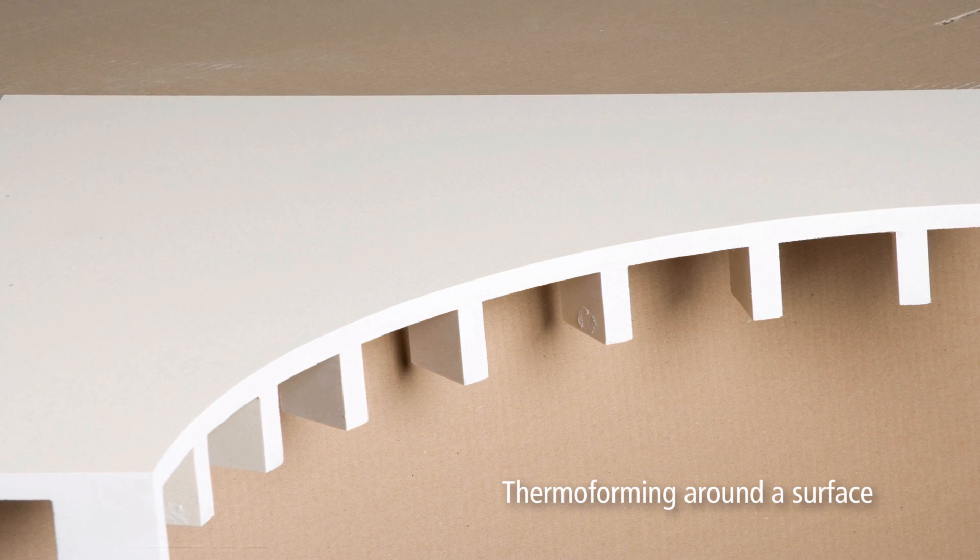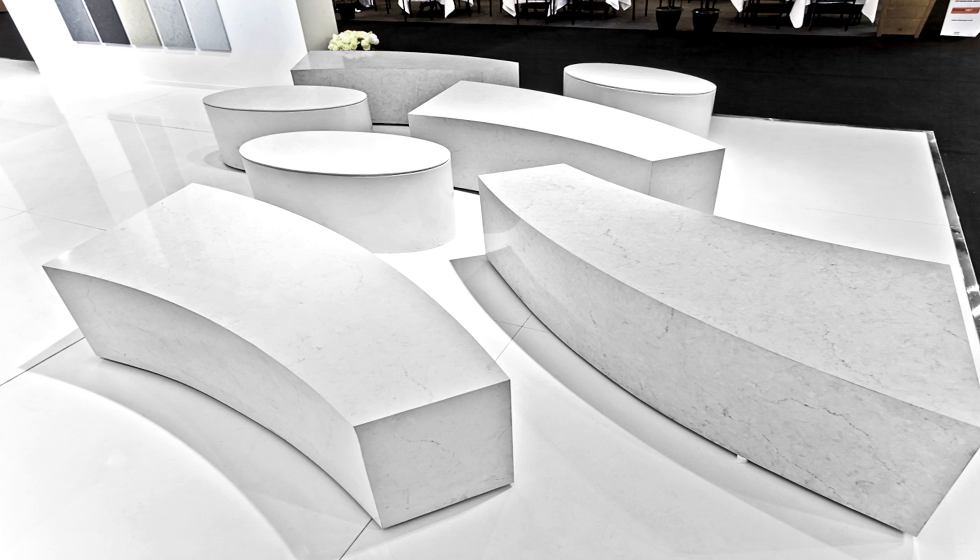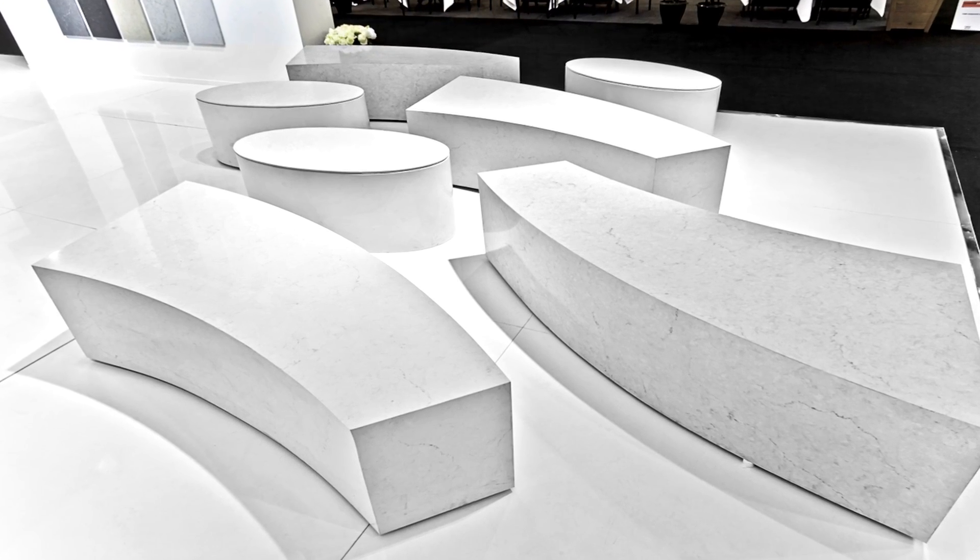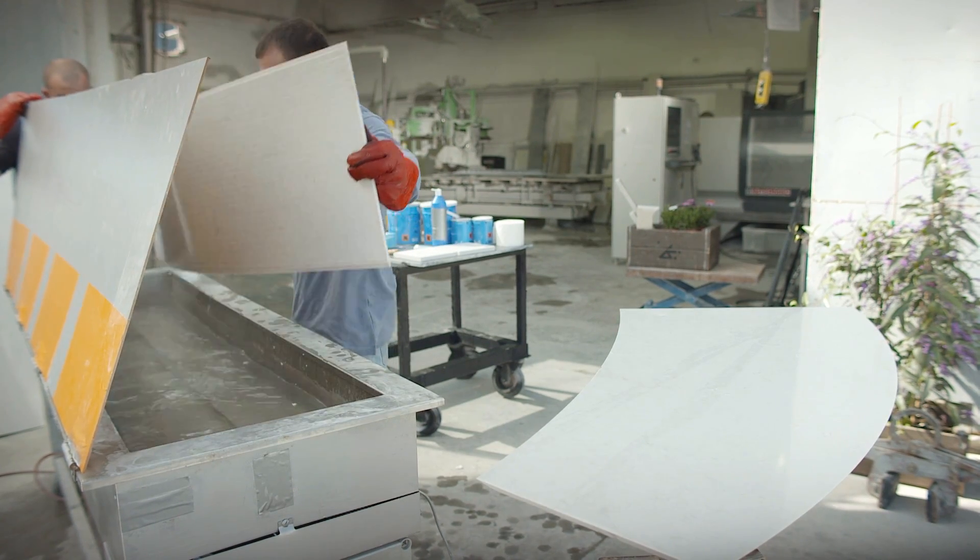Now we'll show you the thermoforming around a surface technique, which is used to create coffee tables like this one. Take the heated, flexible Caesarstone out of the tank and lay it on a flat surface.